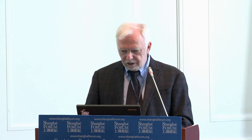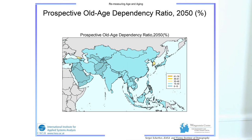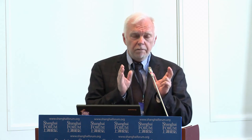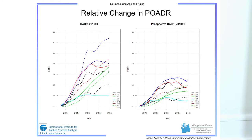The relative change in prospective old age dependency is striking. Under the traditional measure, the fastest-aging country reaches about an eightfold increase, while under the prospective measure, not a single country reaches a fourfold increase — because the new definition affects both the moving threshold and people in working ages.